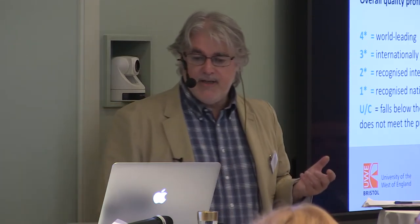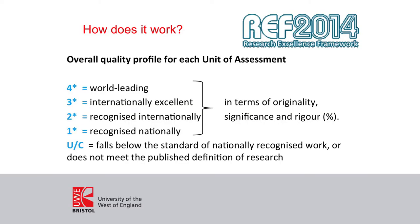What you get from this is an overall quality profile. For each unit of assessment, it's rated according to a formula that gives you an overall quality profile. The scale is a five-point scale from four-star down to unclassified — broadly speaking, world leading, internationally excellent, recognised internationally, recognised nationally, and then something below that which you don't want to talk about — in terms of originality, significance and rigour. Your research is rated as a percentage according to which of those elements are strongest.